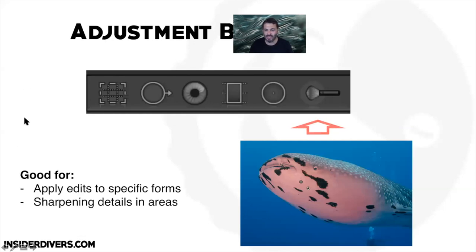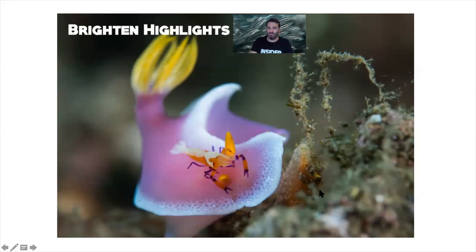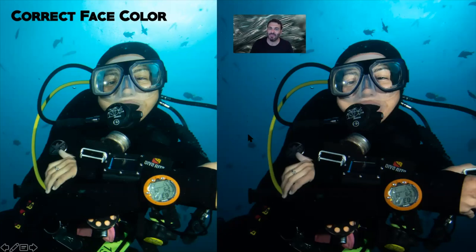Now we come to the most versatile one: the brush filter. There are two ways to apply this brush. You can brush into recognizable forms. What you can do with that is selectively apply highlights, change face color — for example paint a little bit of white balance into the face and hands to get an actual skin color — and you can have a different white balance just for the human versus the blue water.